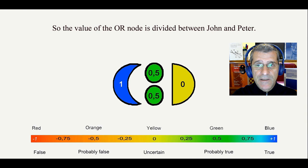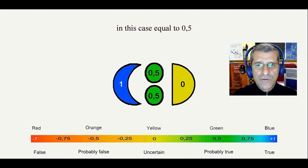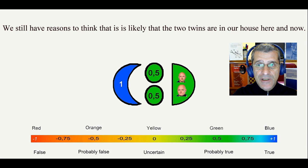At the same time, the OR node acquires a truth value equal to the average truth of the central nodes. In this case, equal to 0.5. We still have reasons to think that it is likely that the two twins are in our house here and now.